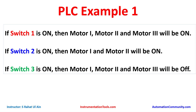Let's start Example 1. If switch 1 is on, then motor 1, motor 2, and motor 3 will be on. If switch 2 is on, then motor 1 and motor 2 will be on. And if switch 3 is on, then motor 1, motor 2, and motor 3 will be off. So when switch 1 is turned on, all 3 motors turn on. When switch 2 is turned on, motor 3 turns off but motor 1 and motor 2 remain on.